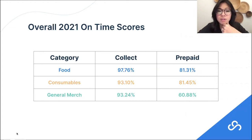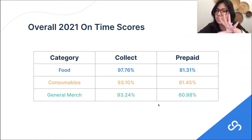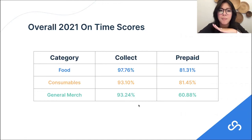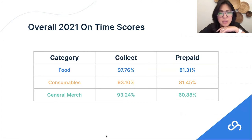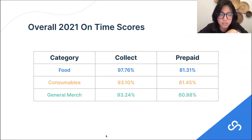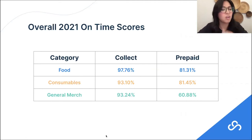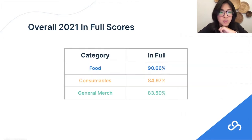The takeaway: if you're a collect supplier, you probably did fairly well in 2021. If you're a prepaid supplier, food and consumables were at a healthier range, but general merchandise suppliers in the prepaid category really took a big hit in 2021. We're already starting to see 2022 scores following a similar-ish trend, but nowhere near as bad as 2021 as supply chains have started to stabilize. Once the fiscal year ends for 2022, we'll do a similar analysis.